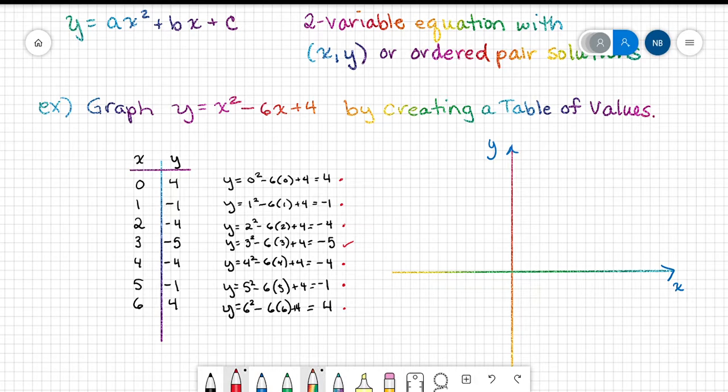Zero comma four means x is zero, so I stay in the middle, and I go up four. One, two, three, four, and I put a dot. When x is one, y is negative one, so I got that one.